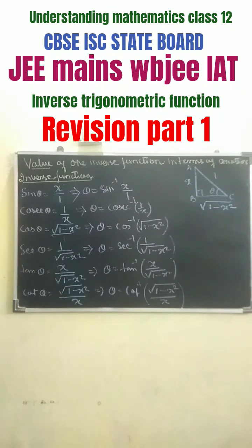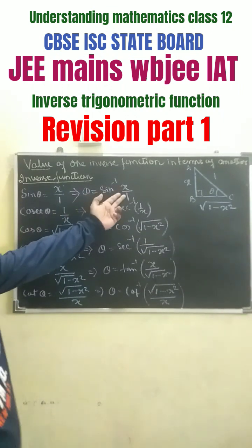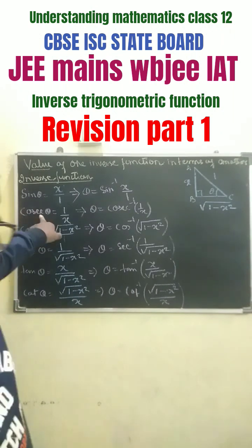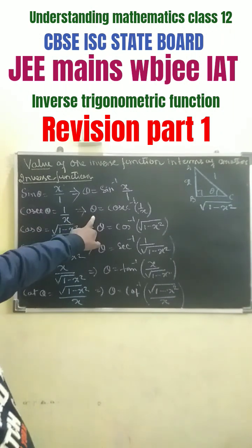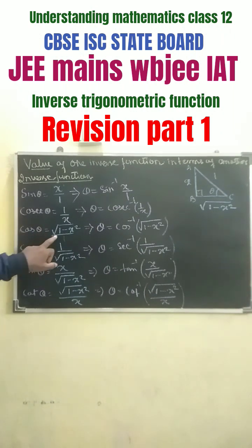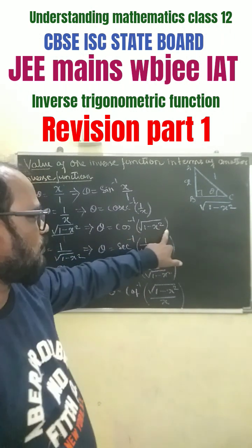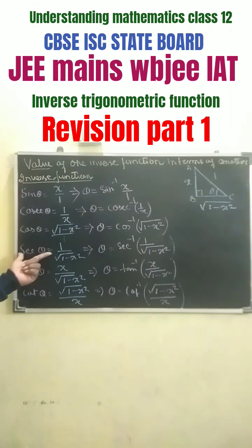We have various trigonometric functions. Here theta equals sin inverse x. Since sec theta equals 1 by x, theta equals sec inverse 1 by x. Since cos theta equals root over 1 minus x squared, theta equals cos inverse root over 1 minus x squared, and similarly for tan theta and cot theta.